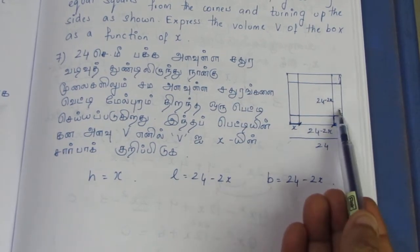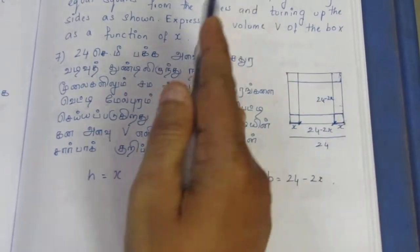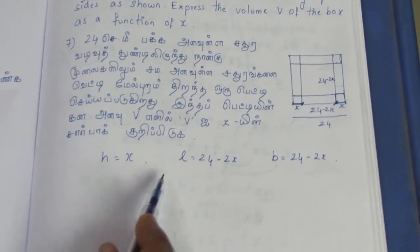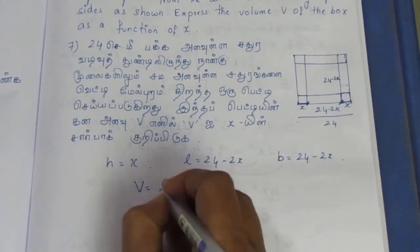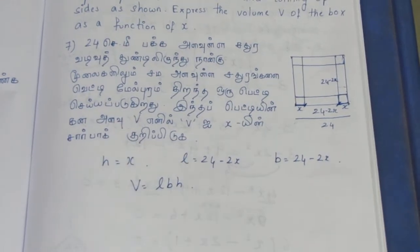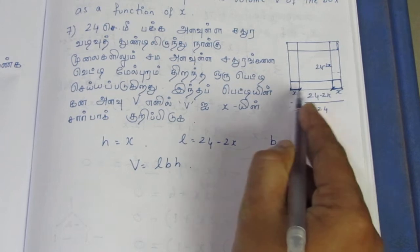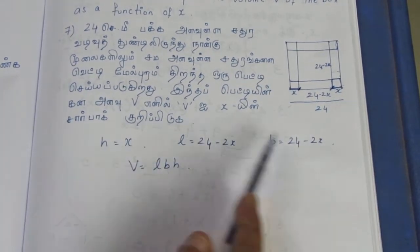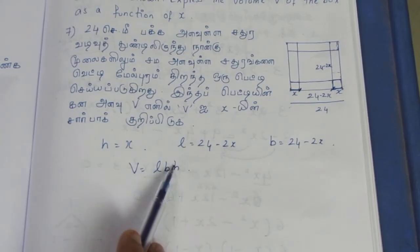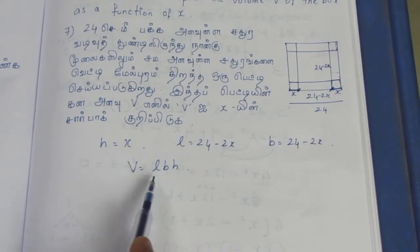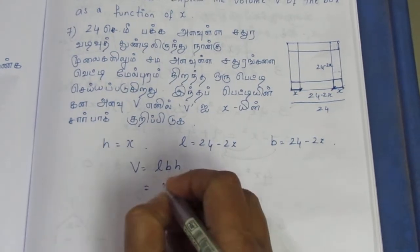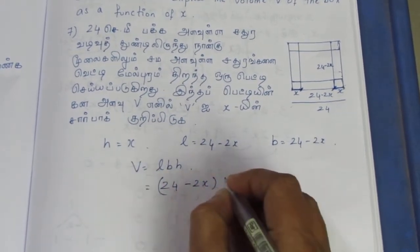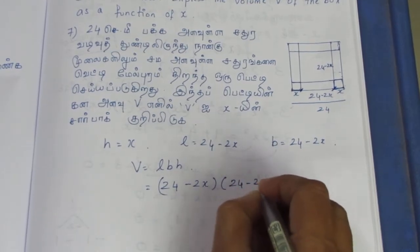The height will be x. The volume formula is LBH — length into breadth into height. Since the length and breadth are the same, the formula is L × B × H.